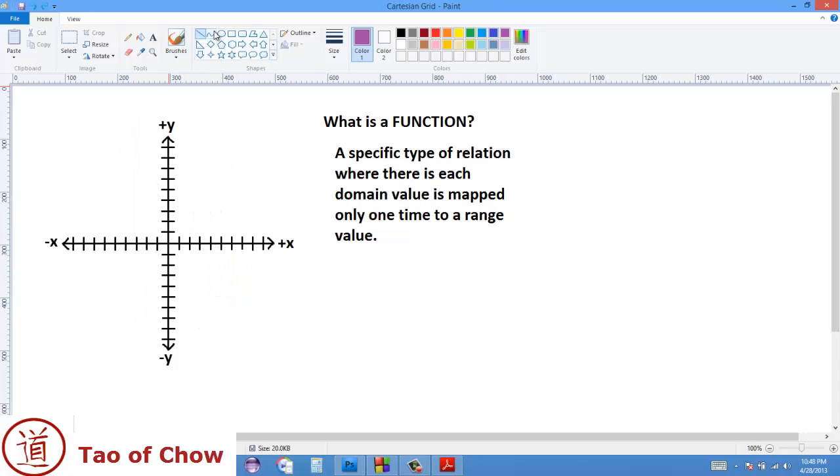This is true for a lot of different types of functions. So for instance, if I did one like this, a parabolic one. Again, if I were to draw another line, this would only contact the graph at one point, as with this one, as with this one, and this one.